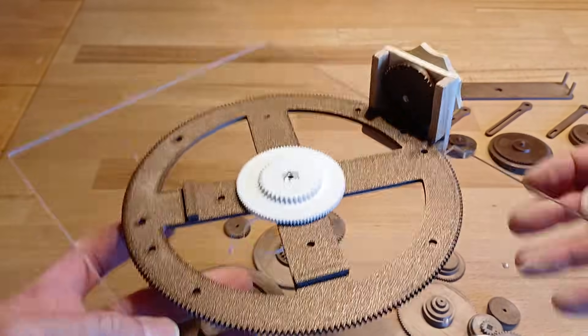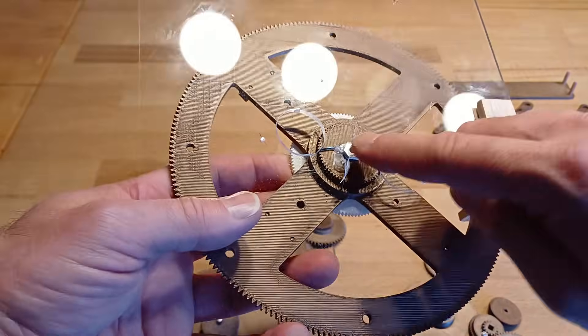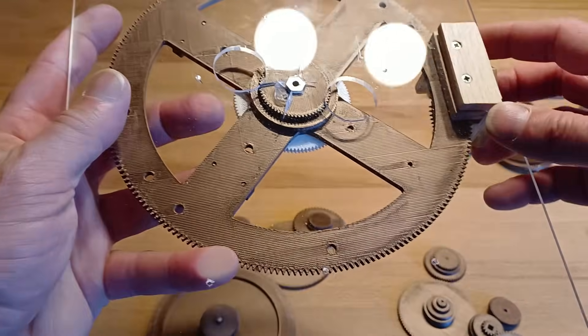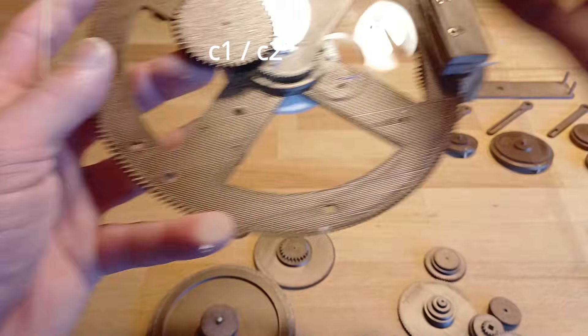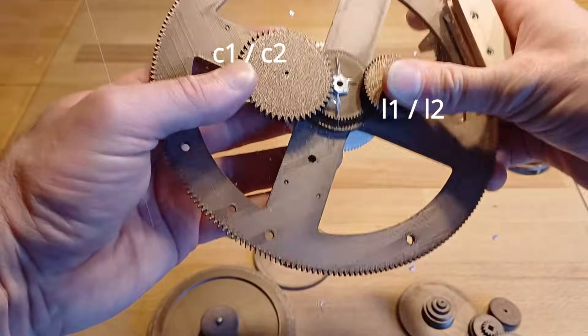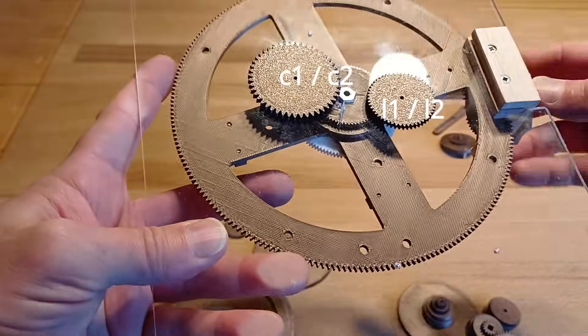These two wheels, which I have here in white, do not rotate with the main wheel but are firmly connected to the base plate. From below come the wheels C for the moon mechanism and L for the calendar calculations.